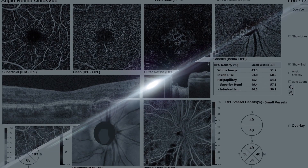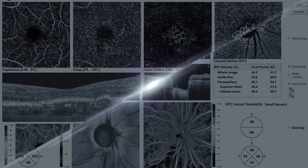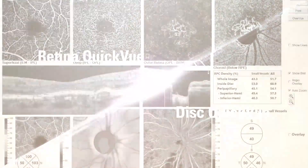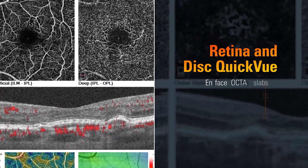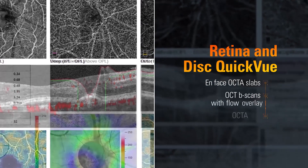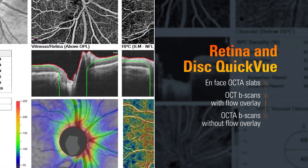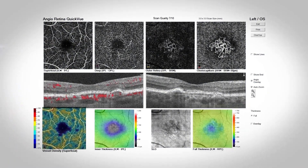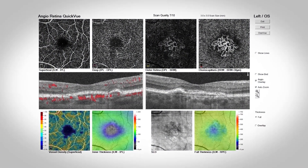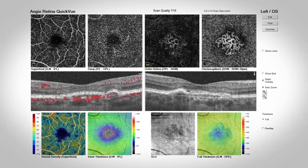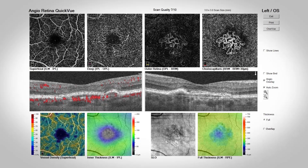Assess retinal and optic disc health at a glance with Retina and Disc QuickView reports. These reports display en face OCT OCTA slabs, plus OCT B-scans both with and without flow overlay. Retina QuickView also shows retina thickness measurements and a vessel density map, allowing for simultaneous evaluation and correlation of structure and vascular integrity.